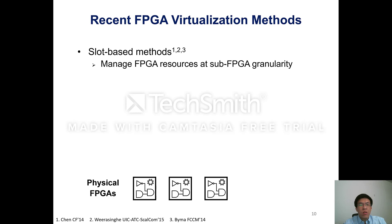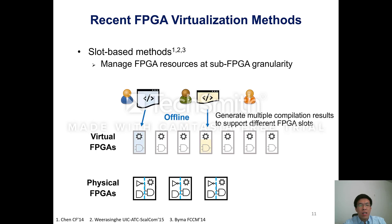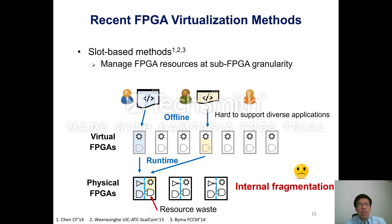Slot-based methods partition a physical FPGA into regions, where all regions provide the same amount of FPGA resources and the same interface to peripheral devices. These regions are abstracted as a pool of virtual FPGAs. User applications are offline compiled onto virtual FPGAs and deployed onto physical FPGAs at runtime. Since resources are managed at sub-FPGA granularity, this method enables FPGA sharing and improves resource utilization. However, this method typically partitions physical FPGAs into regions with the same capacity, making it hard to support diverse applications, and improvement in resource utilization could be limited due to internal fragmentation.